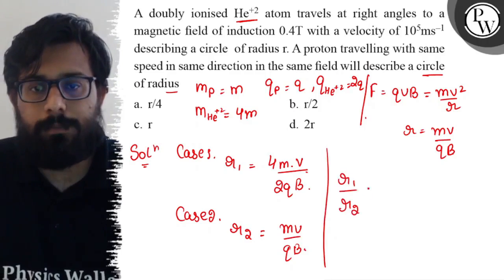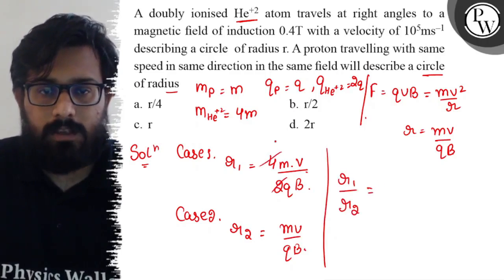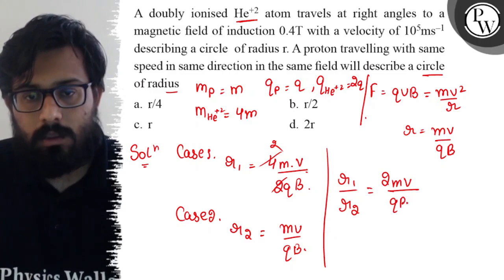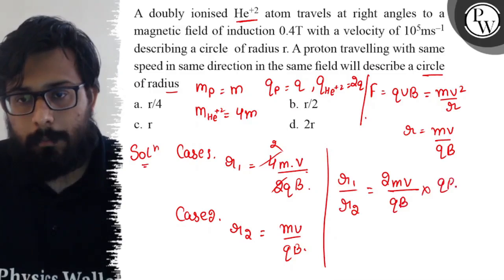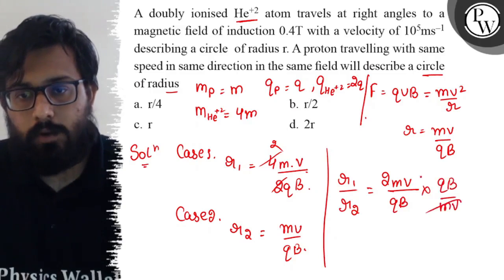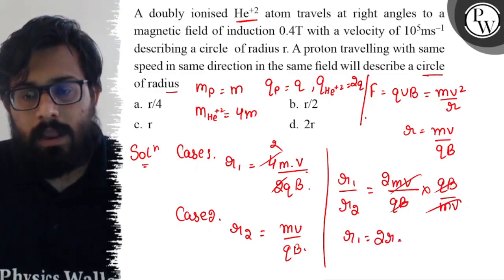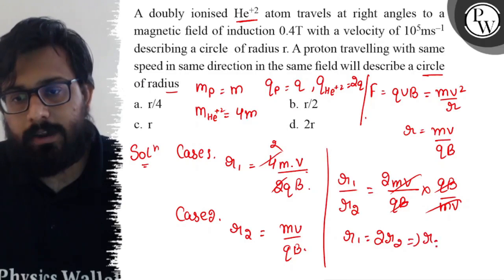Simplifying: 2mv/qB times qB/mv. The mv cancels with mv, qB cancels with qB. r1 equals 2r2, and from here the value of r2 can be written as r1/2.